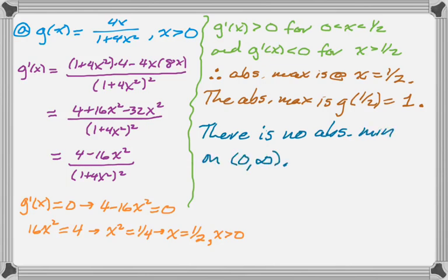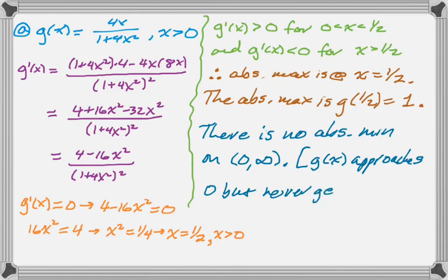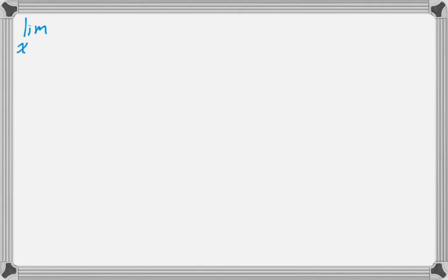And then there actually is no absolute minimum. And that's because of the interval that we're on, maybe. But definitely there is no absolute minimum. And g of x gets kind of arbitrarily close to 0, but it never actually reaches 0. So if you look at the limit as x approaches 0 from the right of g of x, g of x is actually a continuous function if you don't limit the domain, so you can just substitute 0 in and you get 0.